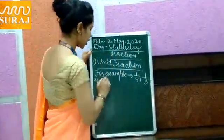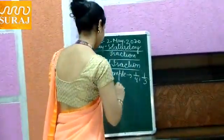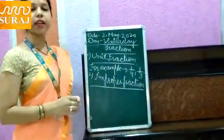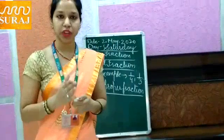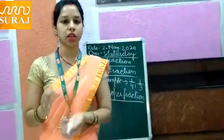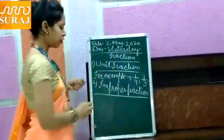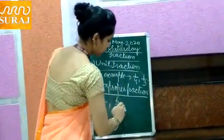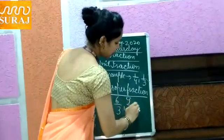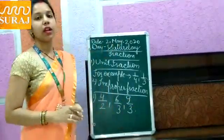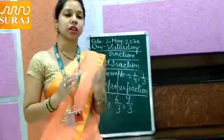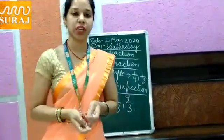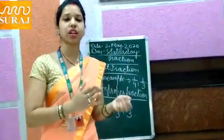Second, improper friction. In improper friction, the numerator is greater than denominator. For example, four upon two, six upon three, nine upon three — the numerator is greater than denominator. Improper fraction woh fraction hota hai jis mein numerator jyada hota hai denominator se.